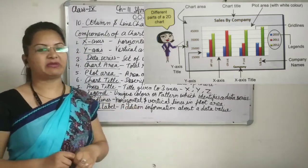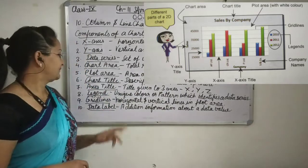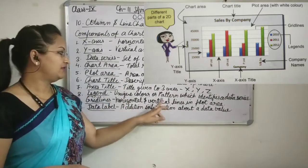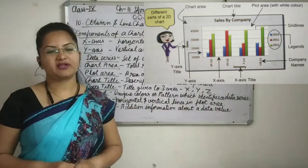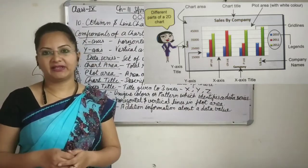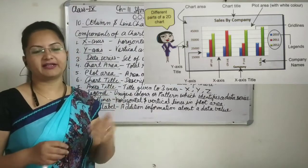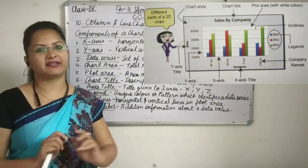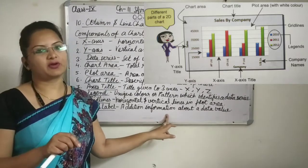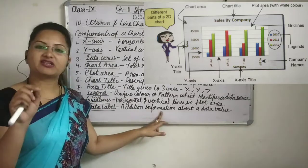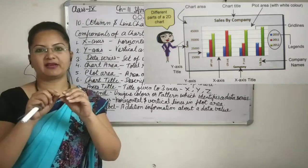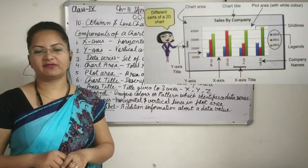Now grid lines. Grid lines will be horizontal and vertical lines which are there in the plot area. To increase the readability of the chart, there are grid lines — we can show grid lines in the plot area. Now data label means when the data values are plotted on the graph, we can give additional information to that particular data value, like if there is some point then we can write company names near it.